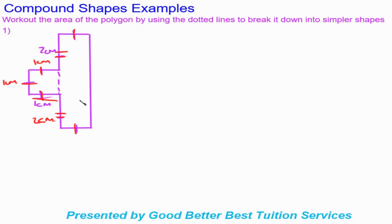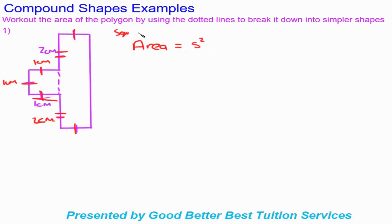We've broken the shape down into two shapes, so we need to work out the area of each separately and then add the areas together. For the square: area equals side squared. One side is one centimeter, so area equals one squared, which gives a final answer of one centimeter squared.